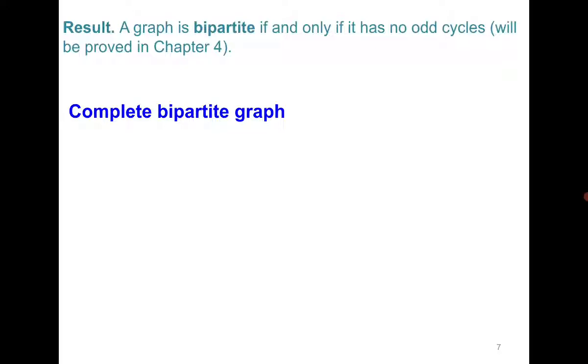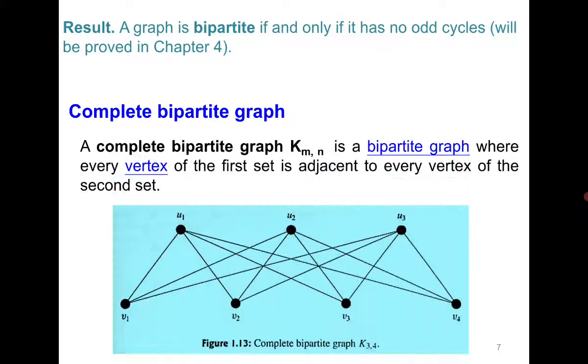Complete bipartite graph. A graph which is complete as well as bipartite denoted as Km,n. It means that every vertex in one set is adjacent to all the vertices of the other set.